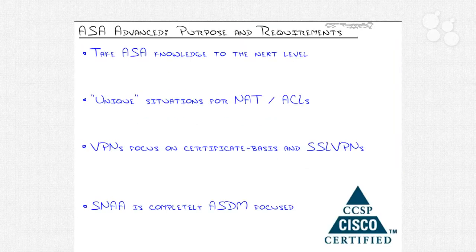So let's start off with the big question: why did Cisco create two certification exams for one firewall, the ASA? Well, the simple answer is it's a big firewall. They tried to integrate three appliances in one — they took the PIX firewall, the IPS appliance, and the VPN concentrator and bundled it all in one box and called it the ASA. So there's a lot to it.